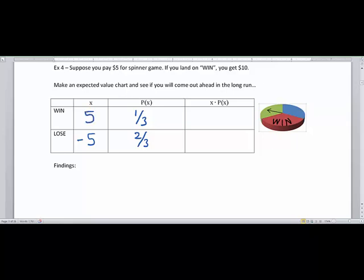Now the reason why that's $5 is because you're paying $5 for the spinner game. And if you land on win, you get $10. So if you've given them 5 and you win 10, then you have a profit of $5.